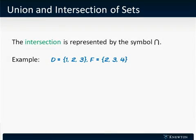If we again have the sets D and F, with elements 1, 2, 3 and 2, 3, 4, respectively, then the intersection of D and F consists of the terms 2 and 3, because those terms are in both sets.